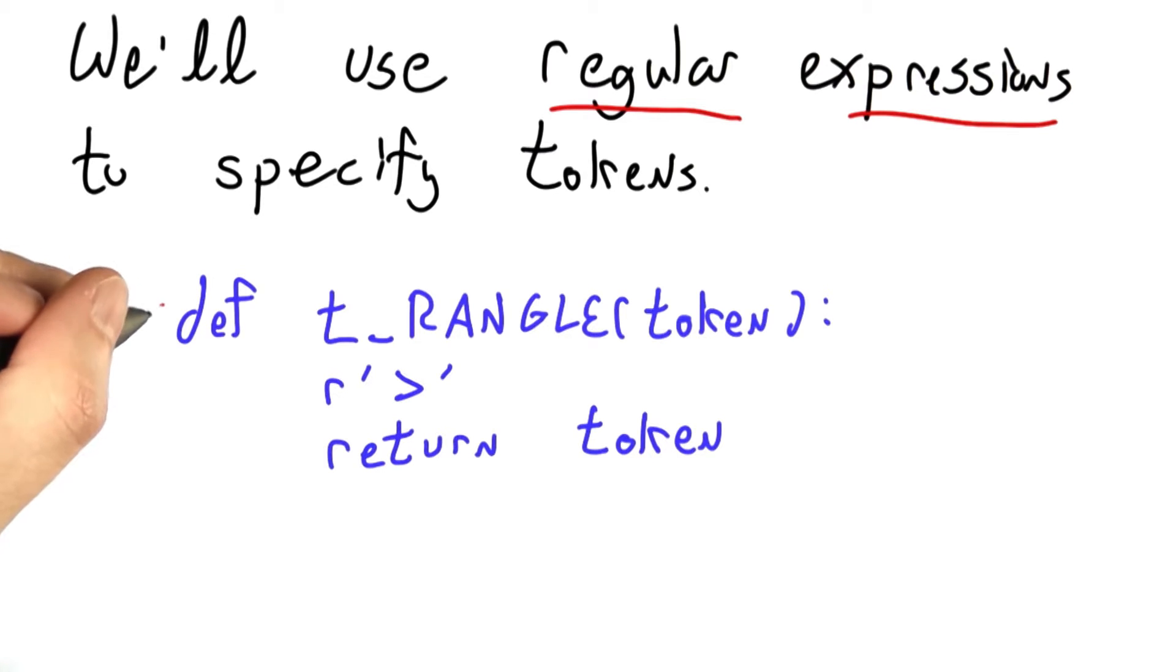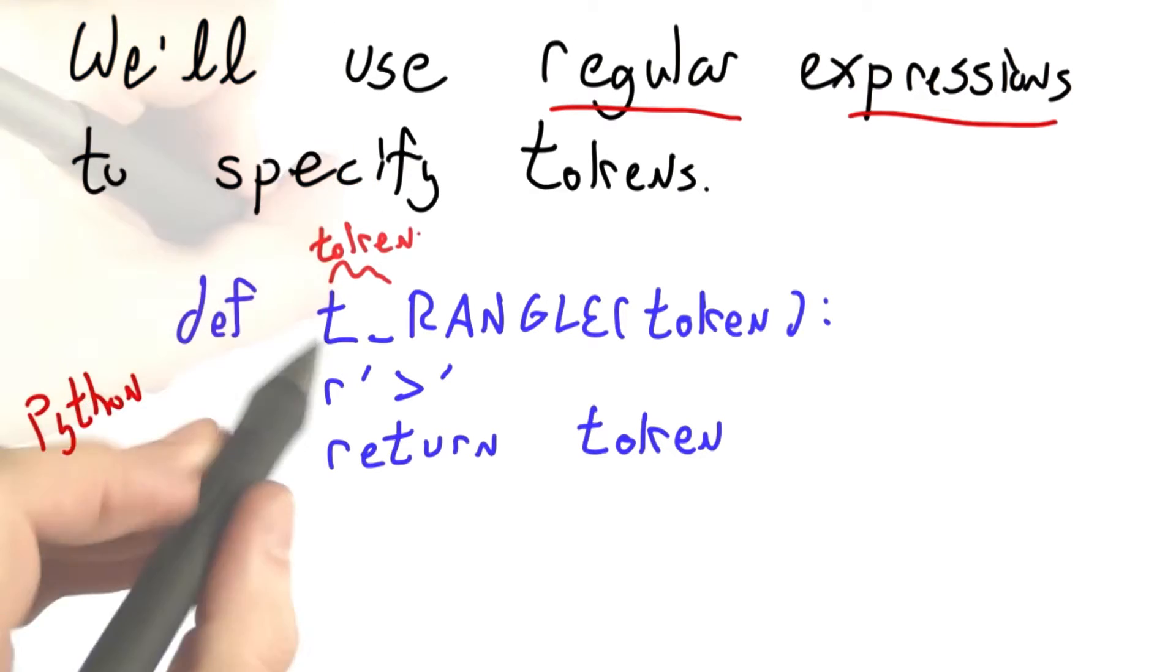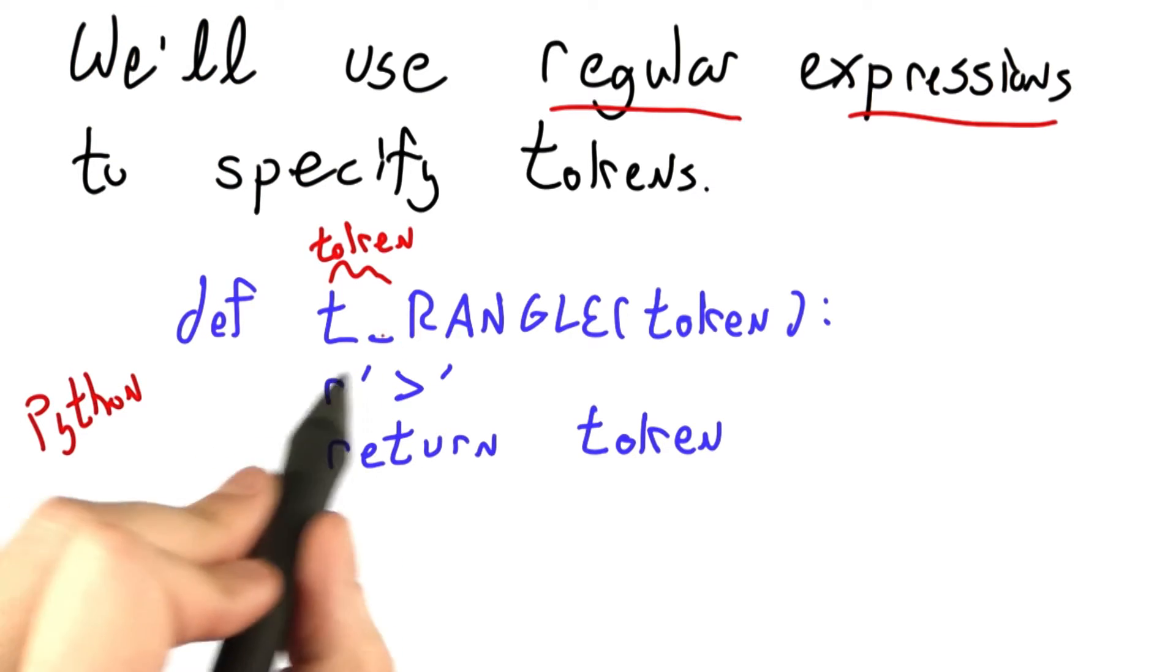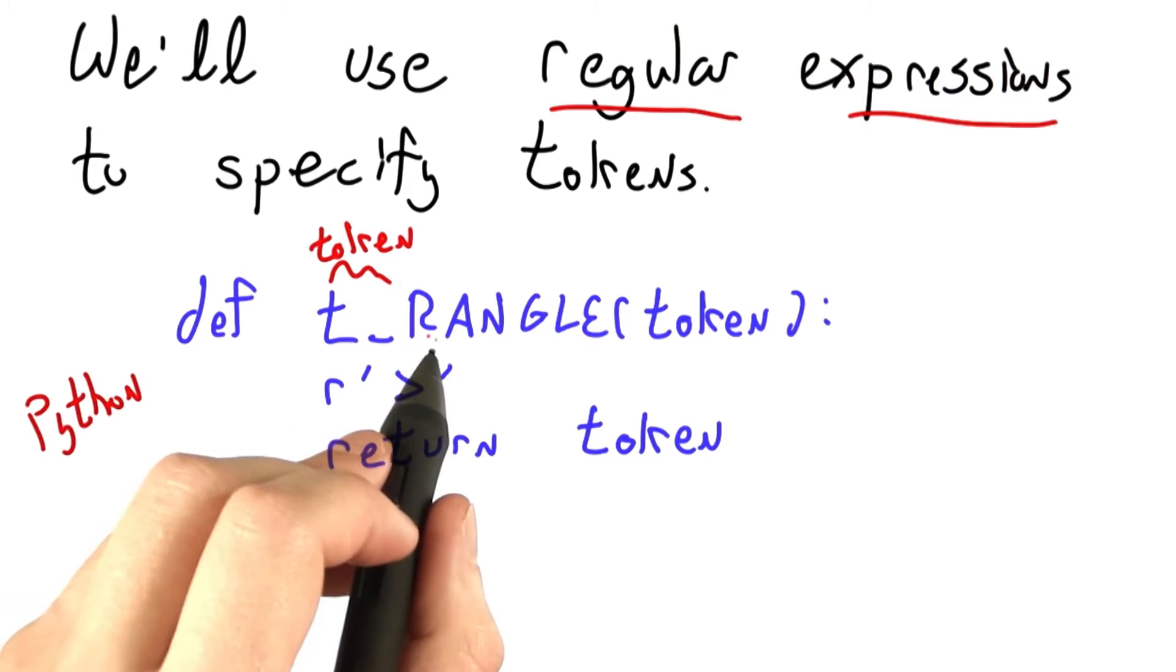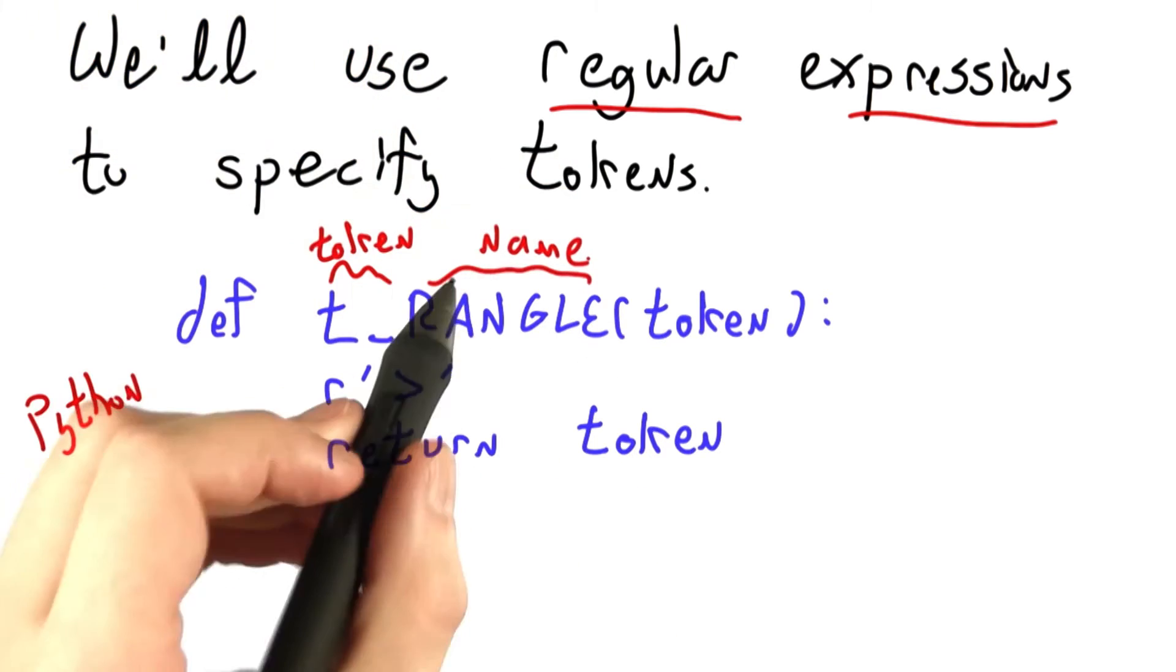This is how we write out token definitions in Python. The T underscore tells the Python system that we're declaring a token. The next letters are the name of the token.